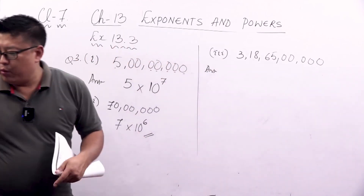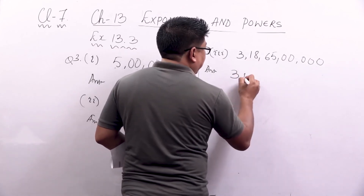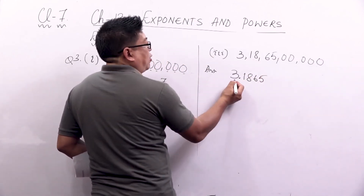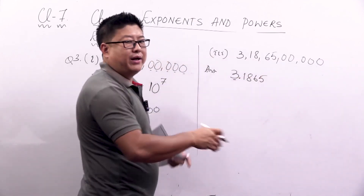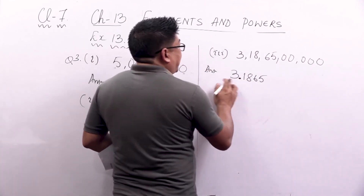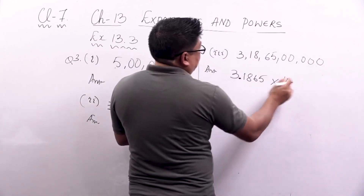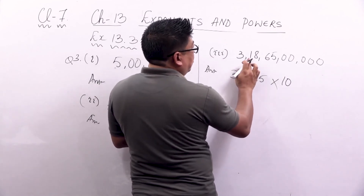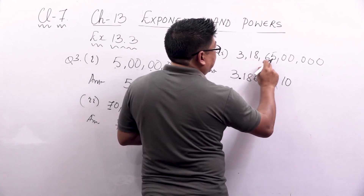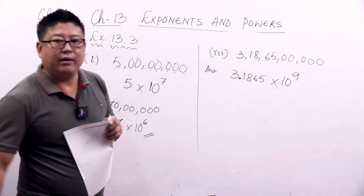We take only one digit before the decimal point, so we write 3 point 1865 into 10. Before the decimal point only one digit, after the decimal point there may be as many digits as needed. Now to find the exponent, start counting from after the decimal point: 1, 2, 3, 4, 5, 6, 7, 8, 9 — so you write 10 to the power 9.